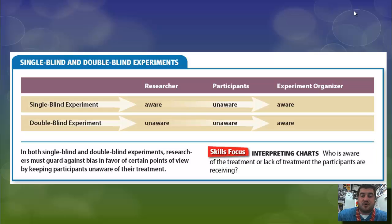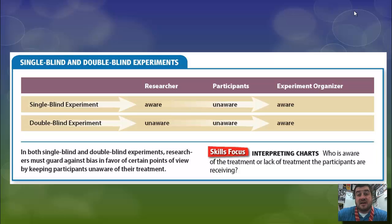Here it is in a chart showing who is aware and unaware. The participants are always unaware, and the experiment organizers are aware. So the difference is: is the researcher aware or not?